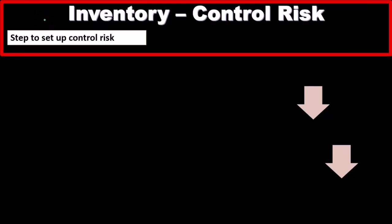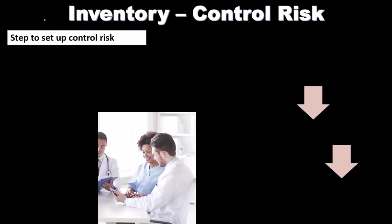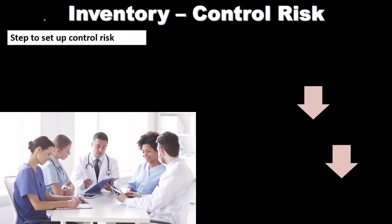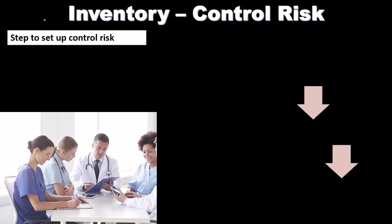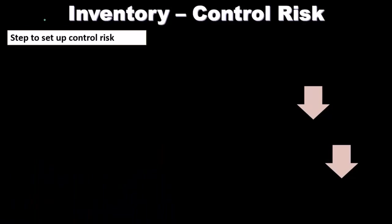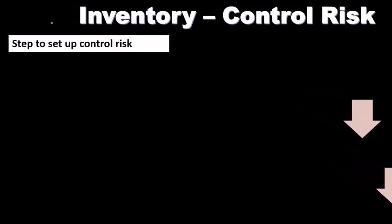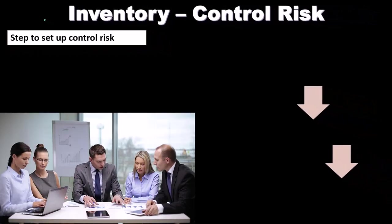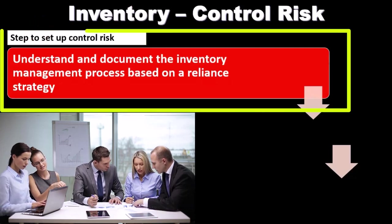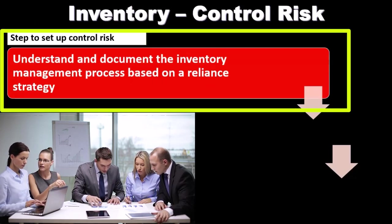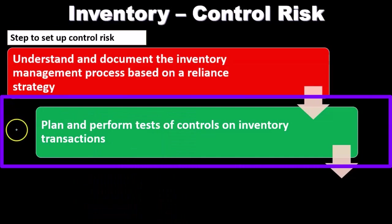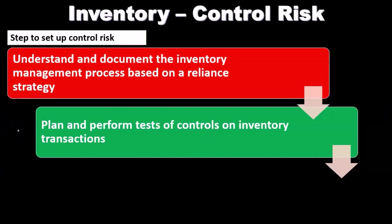Control risk is something that, knowing the inherent risks of the industry, the company puts controls in place to mitigate. As auditors, we also want to depend on the controls because we believe they will reduce the likelihood of a material misstatement. We want to understand and document the inventory management process based on a reliance strategy — understand the process, then plan and perform tests of controls on inventory transactions.